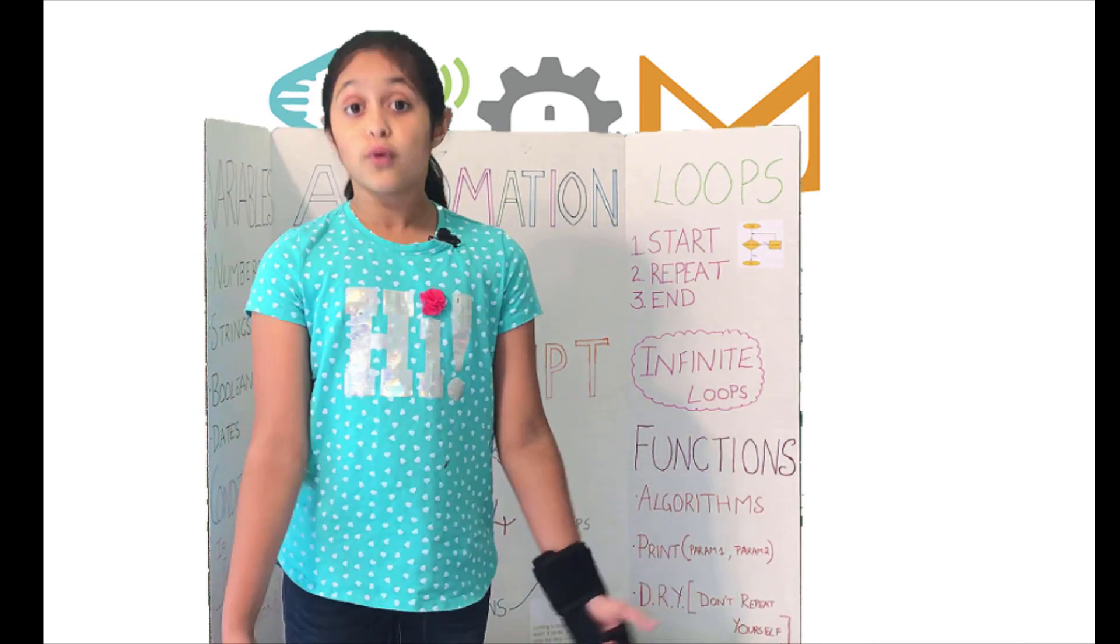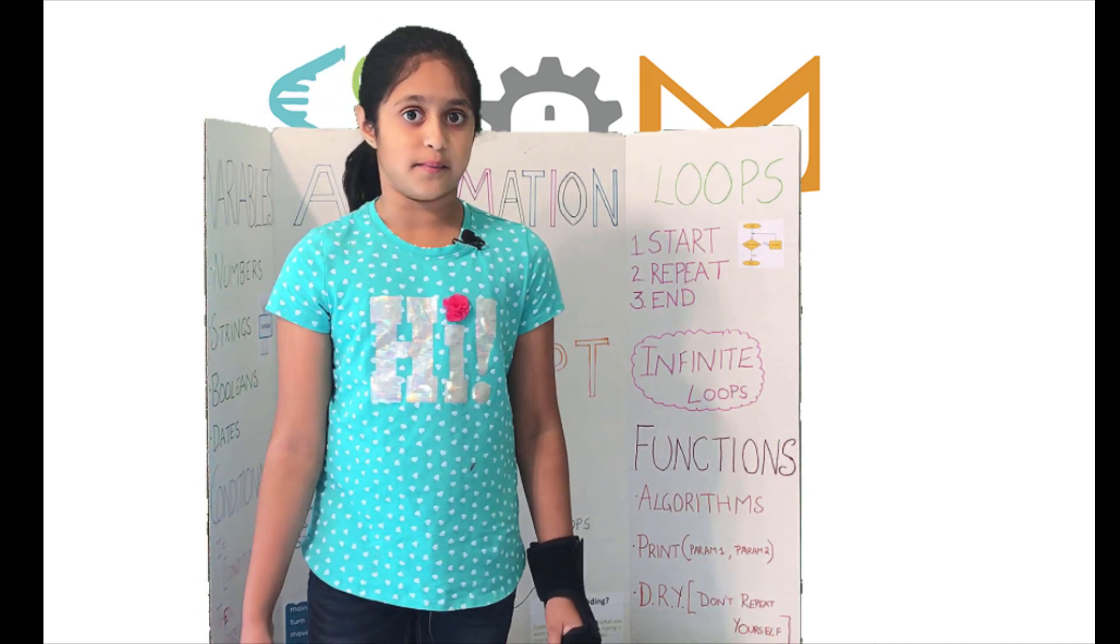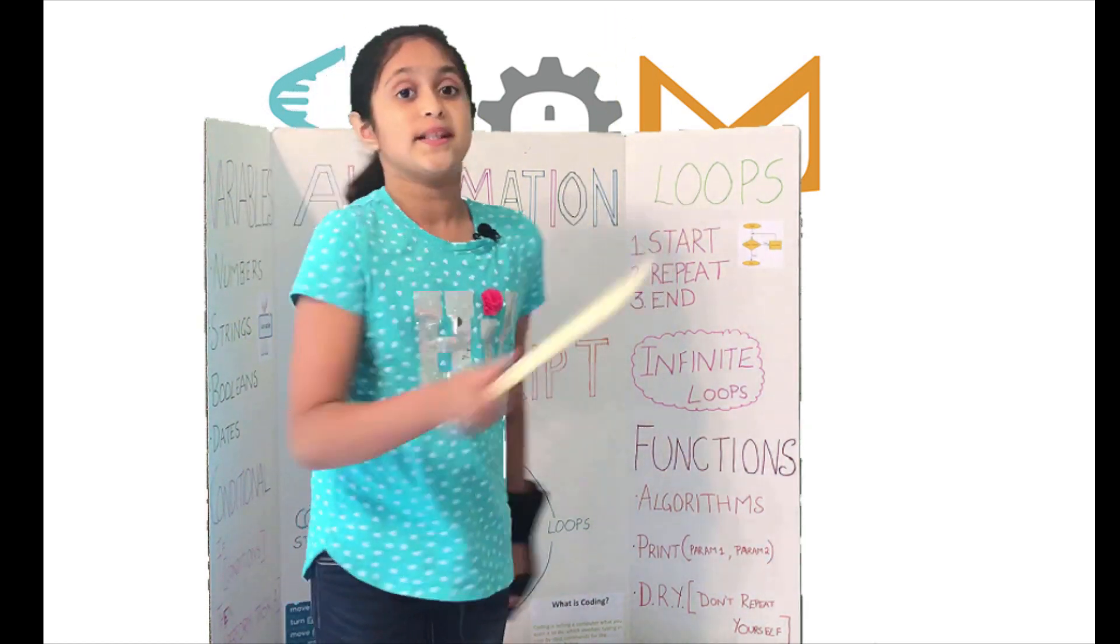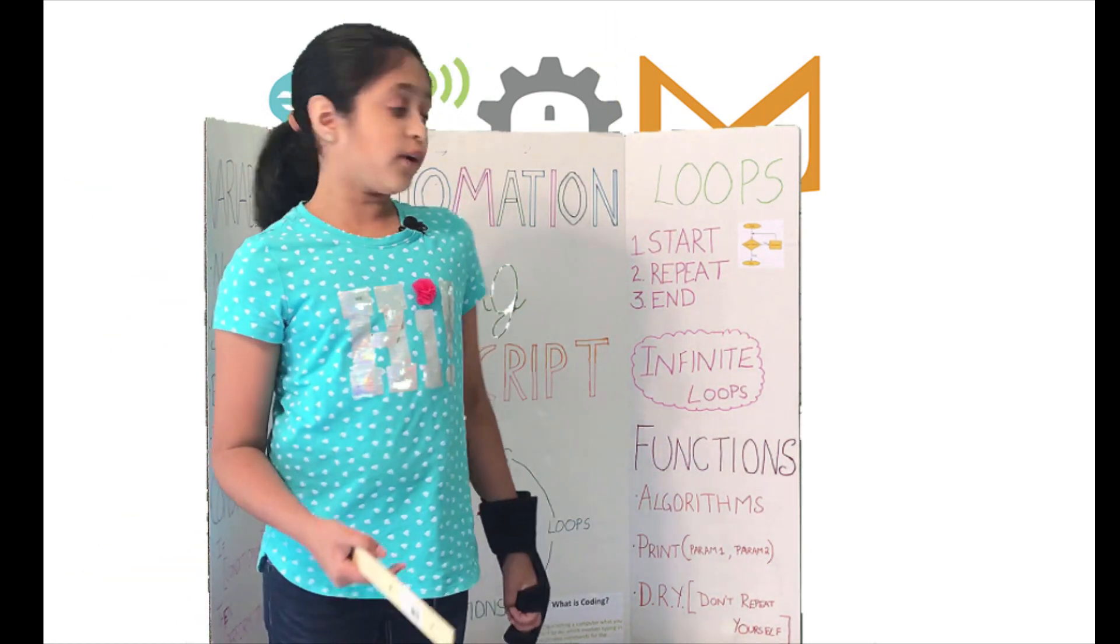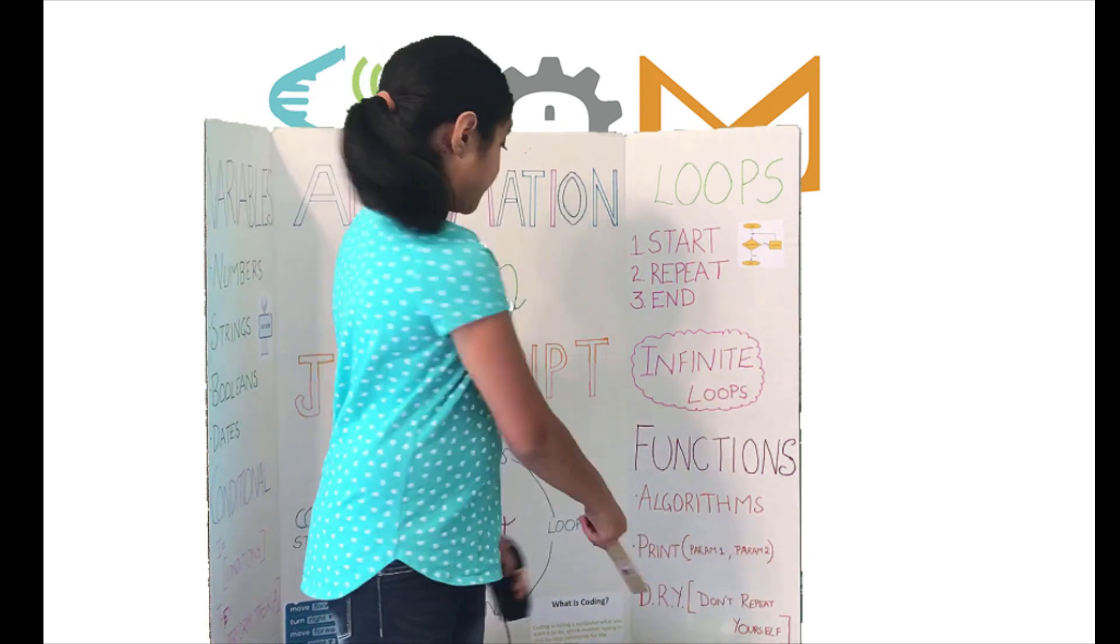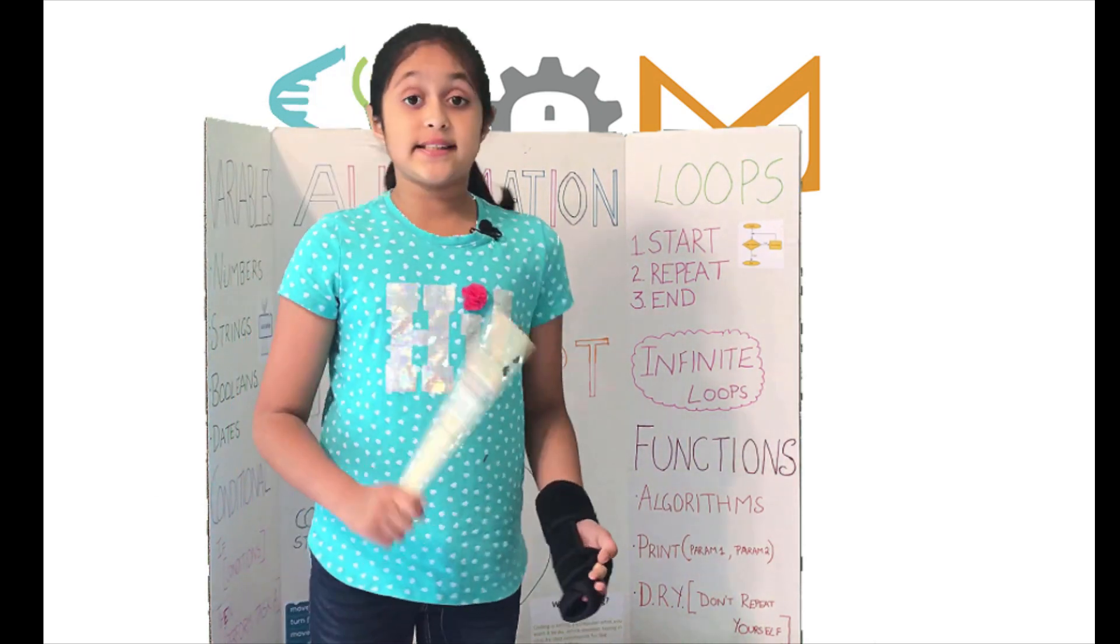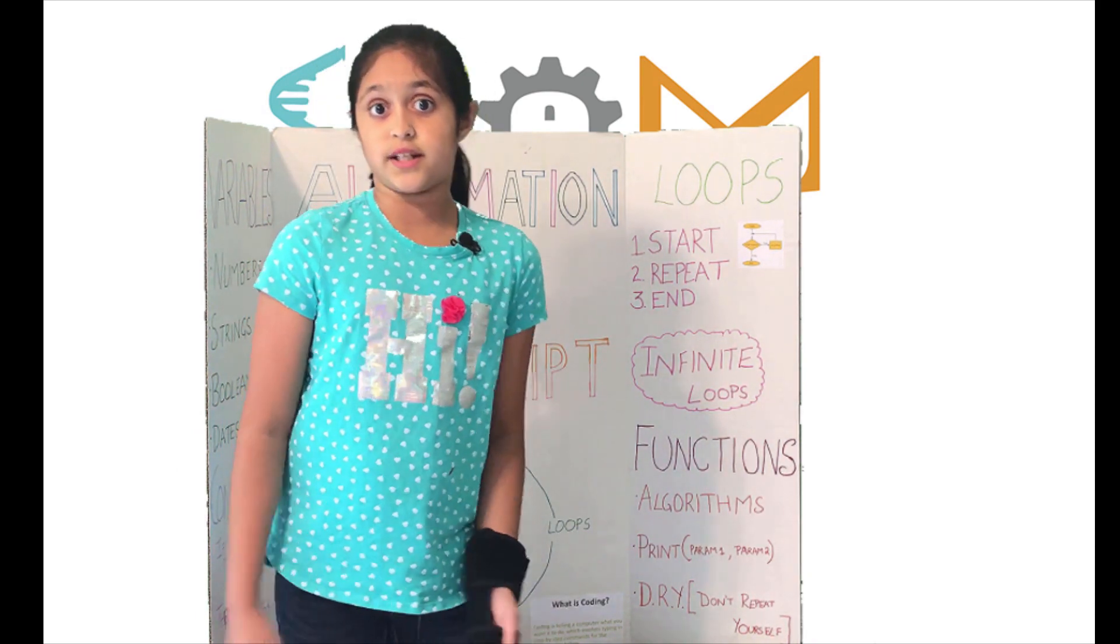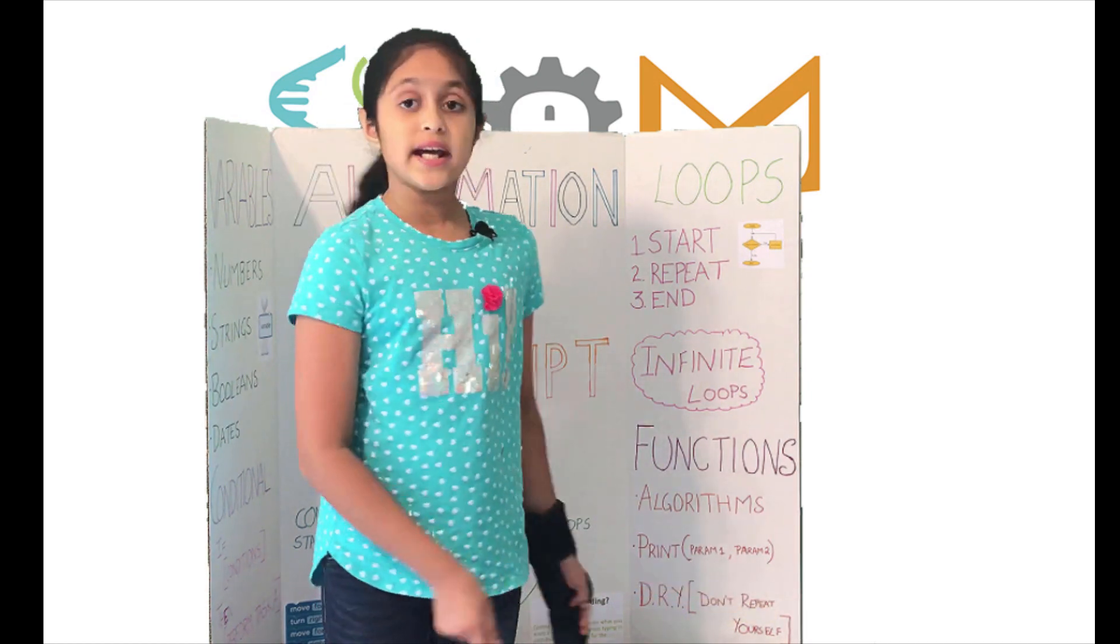So the final principle of Core Four is functions. Inside the functions we have some algorithms, and inside the algorithms we can write loops, conditional statements, and declare some variables. For example, a function example could be a print function which can accept two parameters.